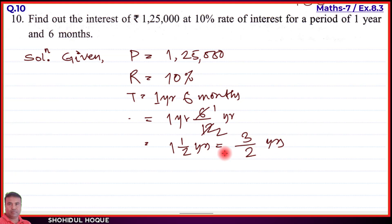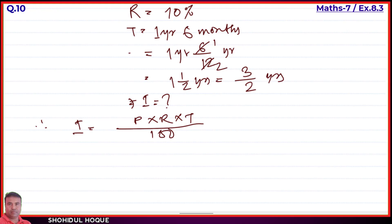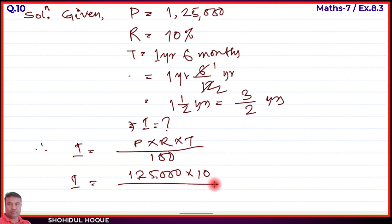Now applying the formula: I = (P × R × T) / 100 = (1,25,000 × 10 × 3/2) / 100. Cancelling zeros: two zeros from 1,25,000 cancel with 100, and 10 with 2. Performing the calculation step by step.